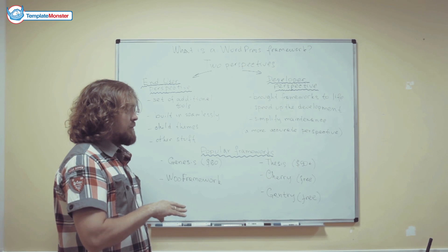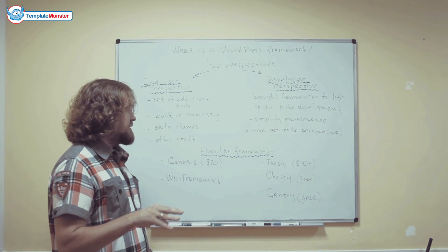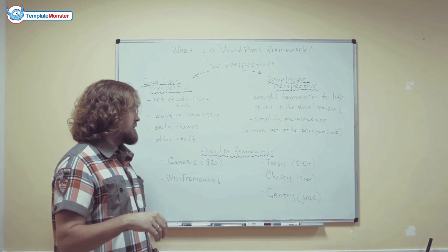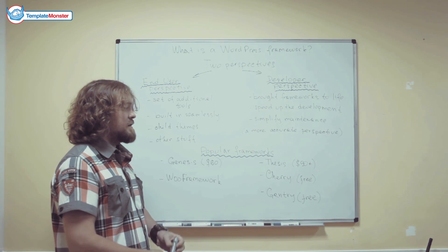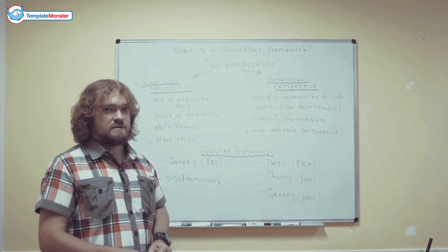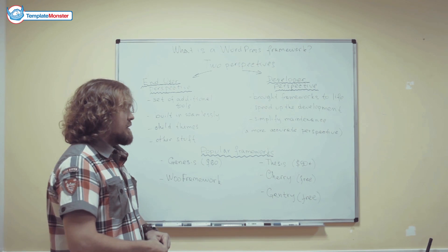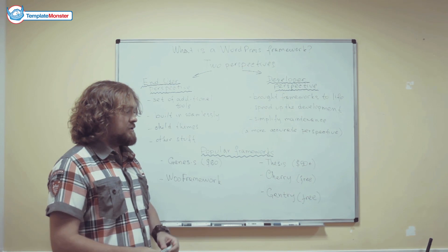So, the top frameworks on the market are not free. The Genesis is $60 per license. Thesis starts at $90 per license. There are more expensive options. And Cherry and Gantry are free.